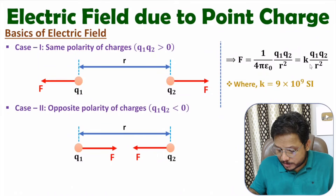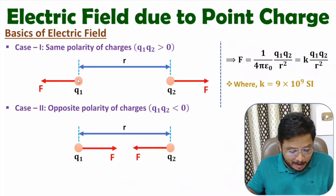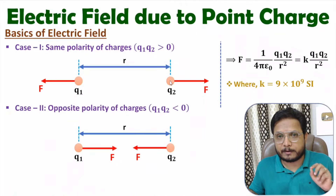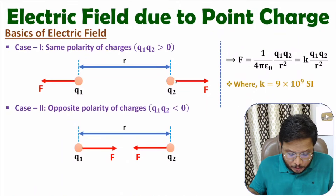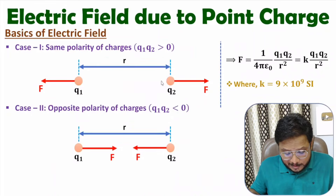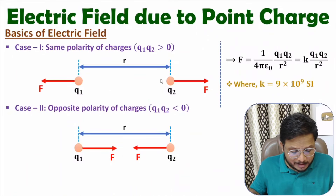I usually use this equation: instead of 1 by 4π epsilon-zero, I write K, where K is 9 × 10⁹ in SI units. Now the question is: why does force happen between two charges? The force happens between two charges due to electric field. Force on charge Q2 happens due to Q1, where Q1 is releasing some electric field, and that electric field results in force on Q2. Similarly, due to Q2, force is happening on Q1 — Q2 generates an electric field that results in force on Q1.